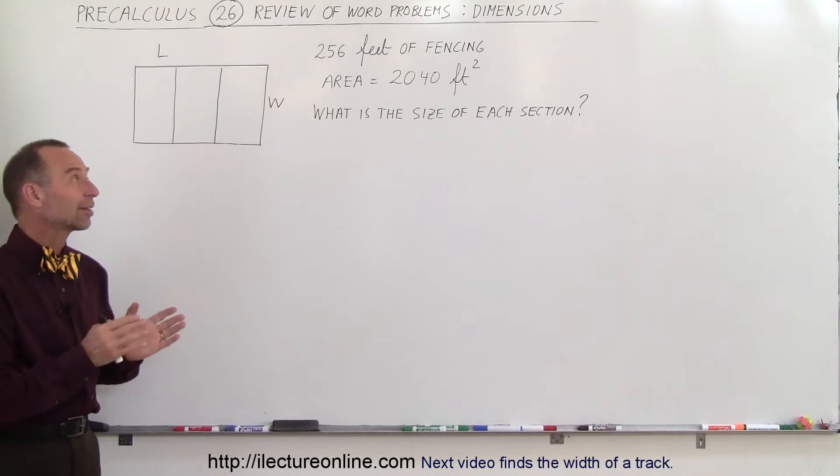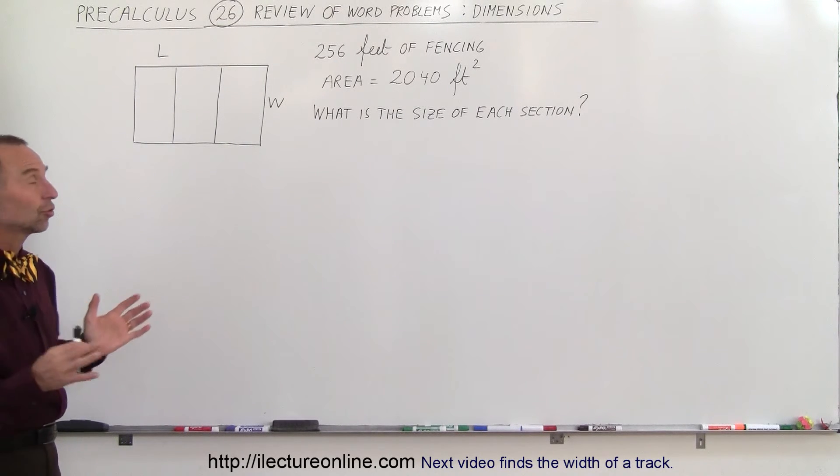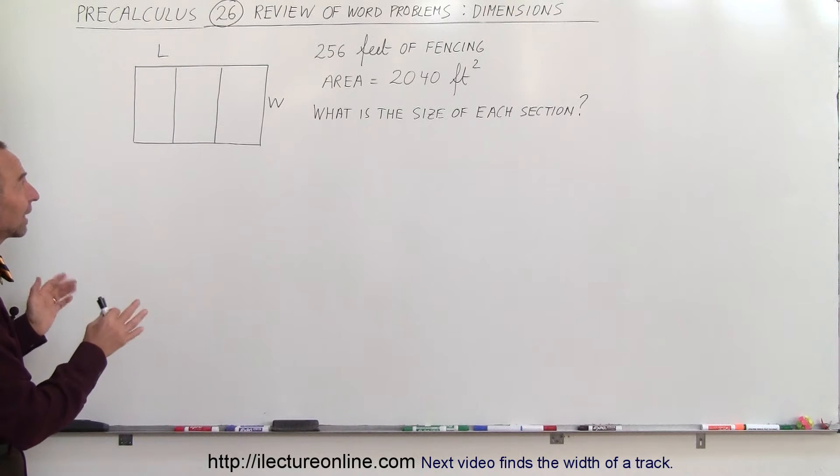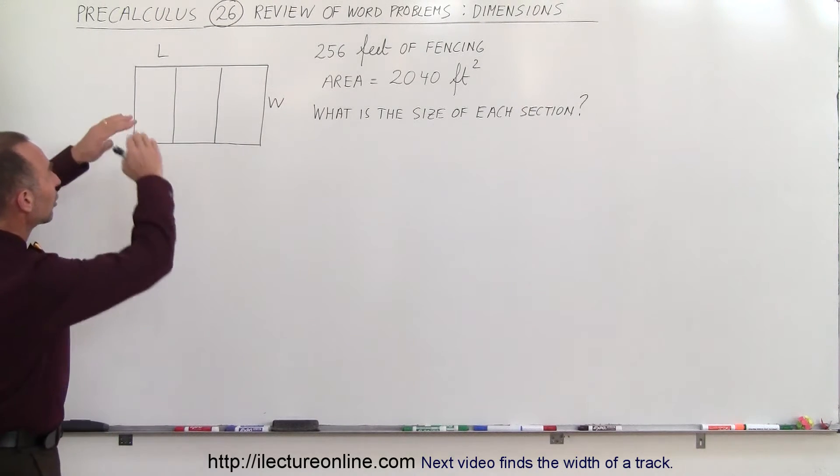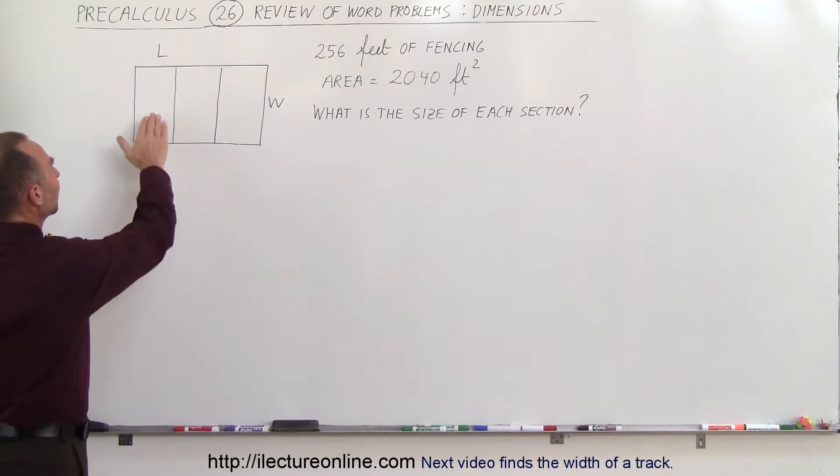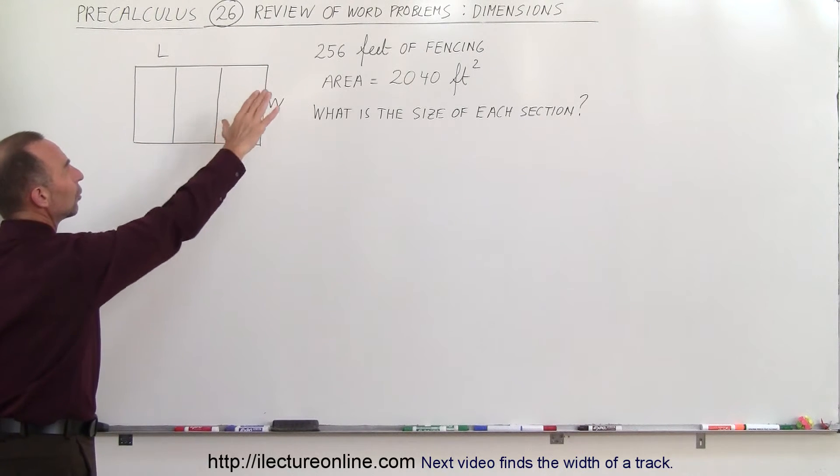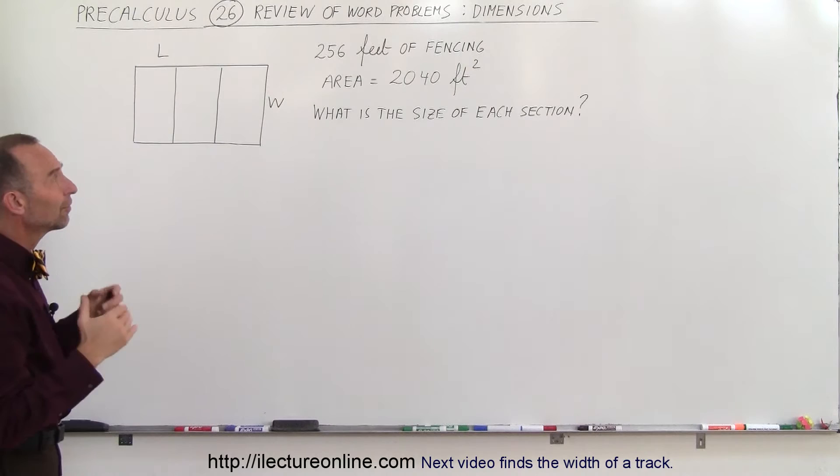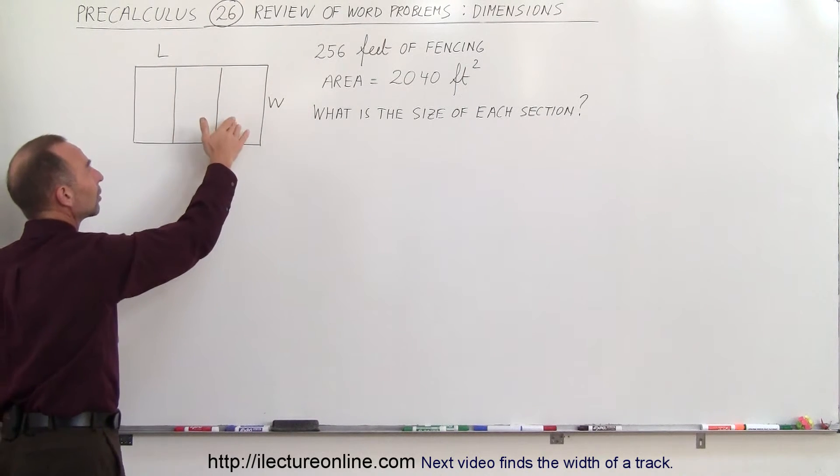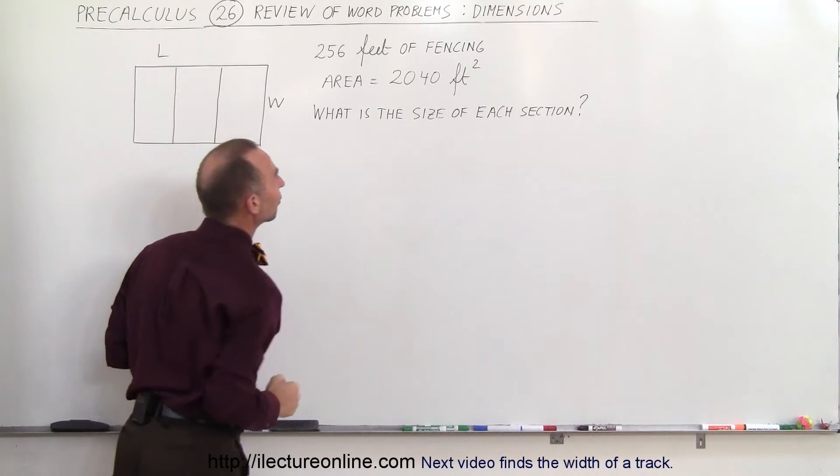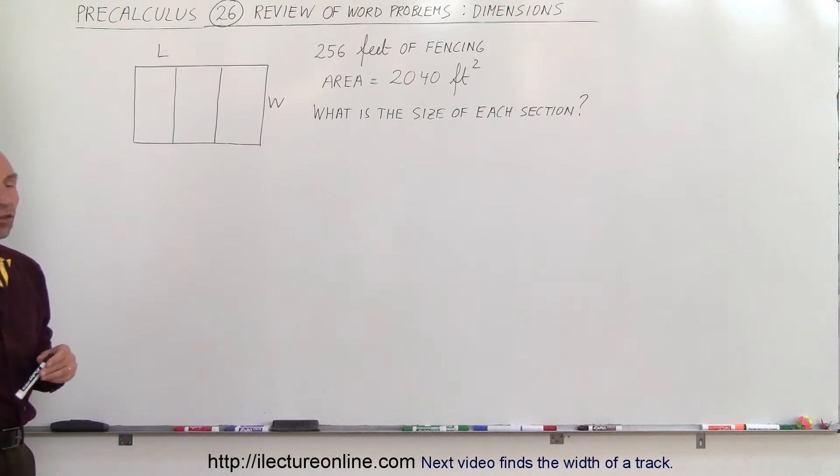Welcome to ElectronLine and our next problem deals with dimensions. Here we have the case where we have 256 feet of fencing and we're supposed to enclose an area in such a way that we have three equal sections. We can only use 256 feet of fencing and the total area of the plot that we're encircling with the fence has to have an area of 2,040 square feet. What should be the size of each section in order to accomplish that?